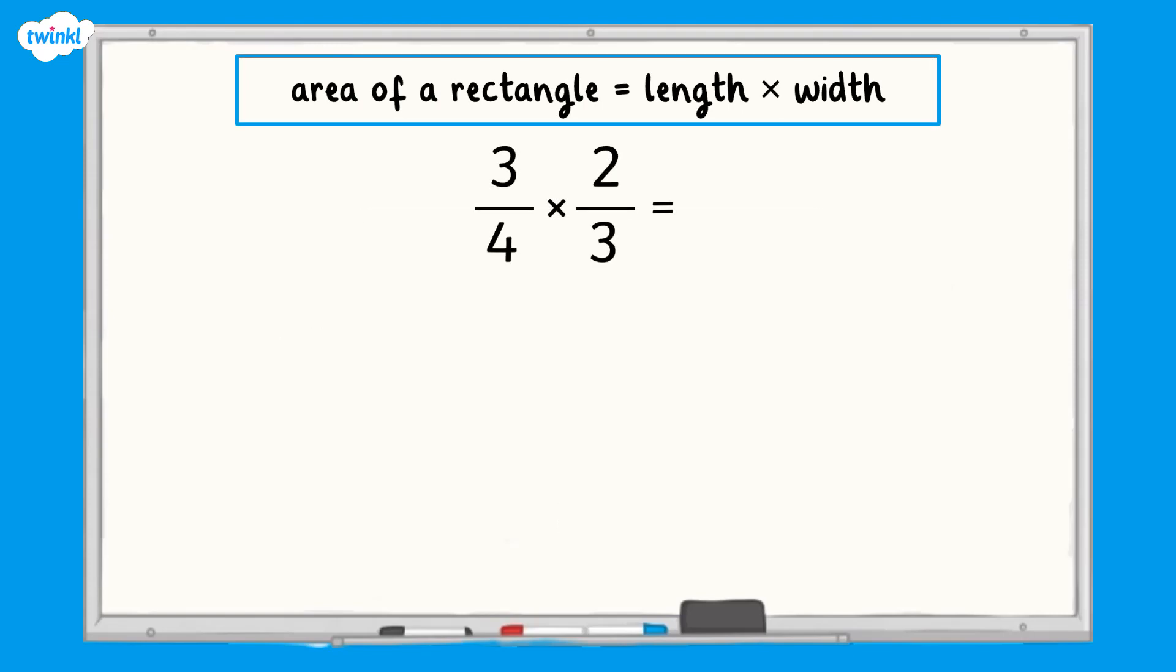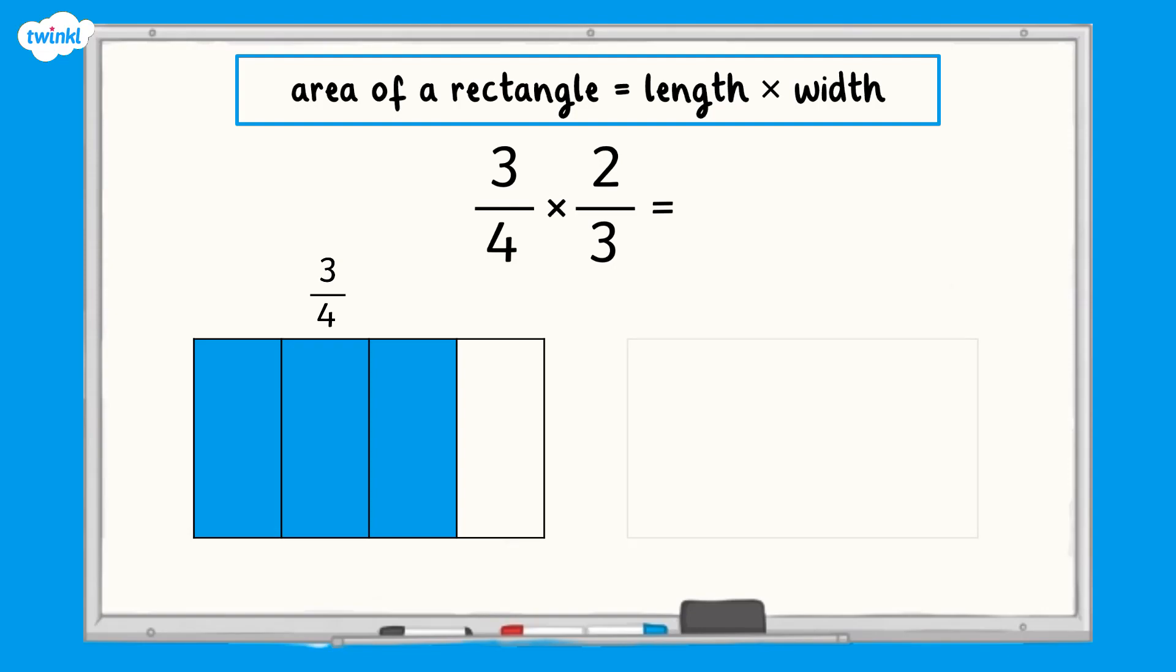To multiply three quarters by two thirds, we can represent it with an area model. To represent three quarters, we need to split the rectangle into four equal pieces and shade three of those pieces. To represent two thirds, we need to split the rectangle into three equal pieces and shade two of the pieces.